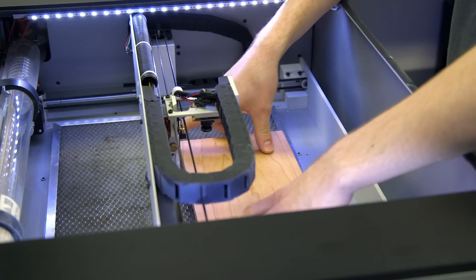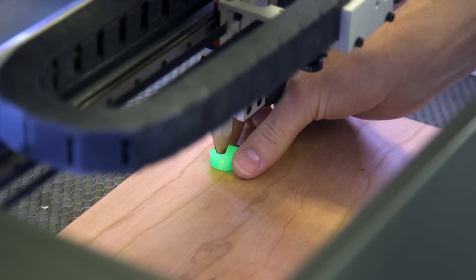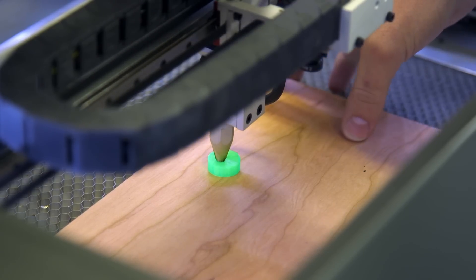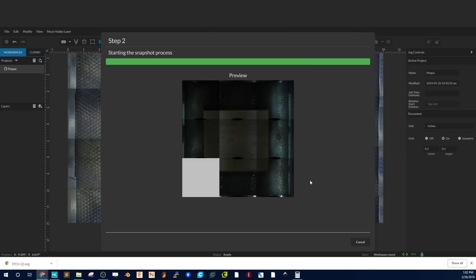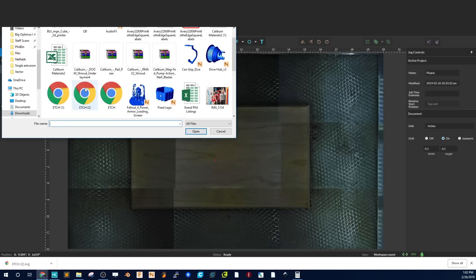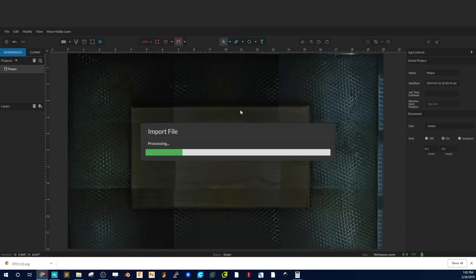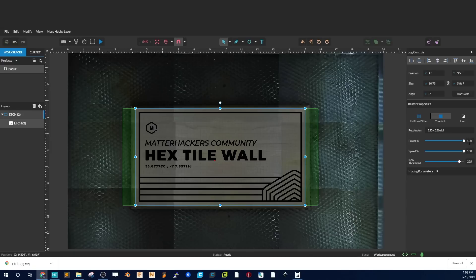Then I dropped that into the Muse and made sure it was square. I used the little 3D printed puck for a height adjustment of the laser, took another snapshot process to get a representation of the wood within the software, brought in the file that we needed to actually raster and etch out of the wood, and you can see it's all finished and looking nice.